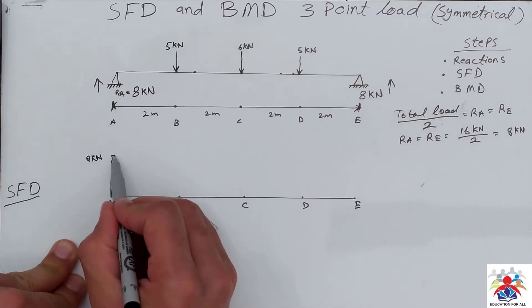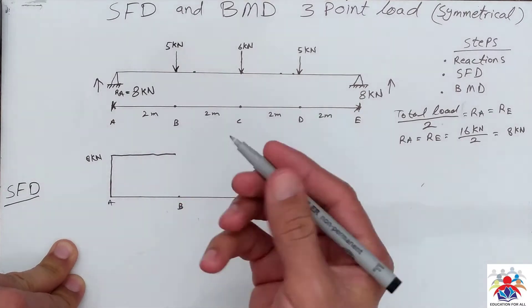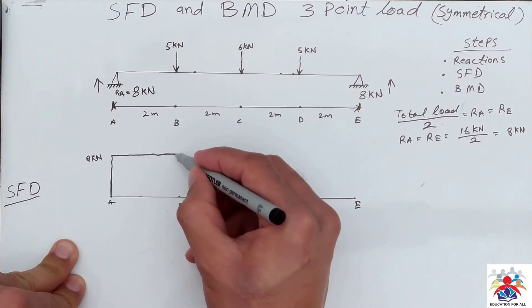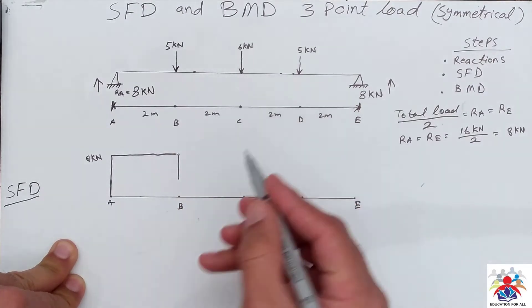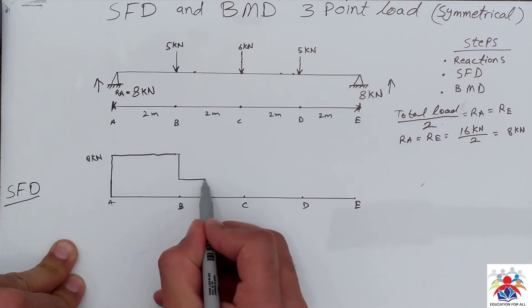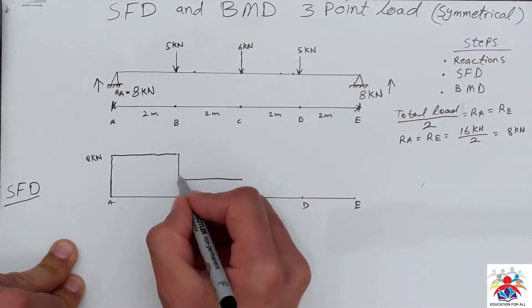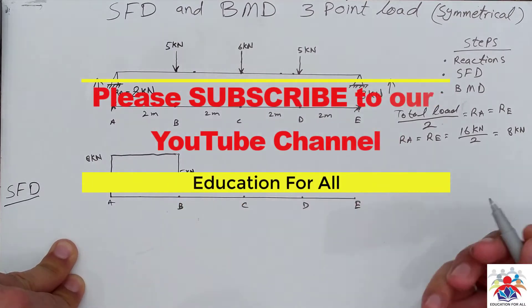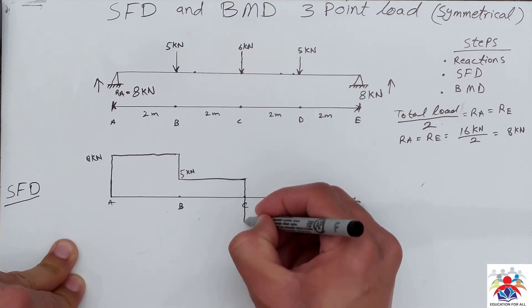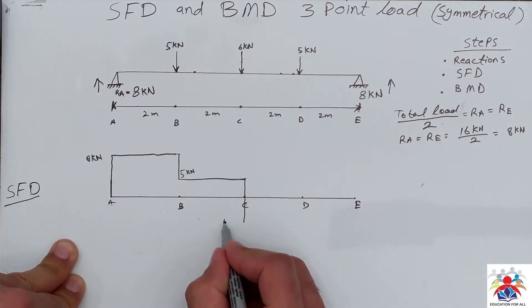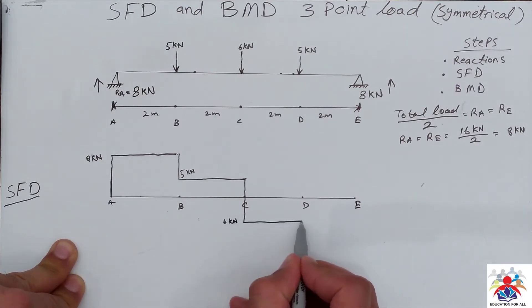We move to point B with a straight line since it's a point load, and then it goes down 5 kilonewtons. Then we move towards point C, where we have 6 kilonewtons acting downwards.